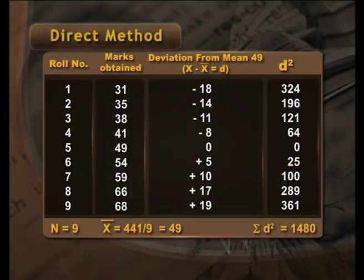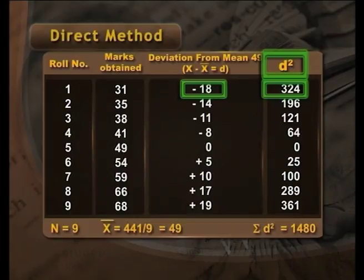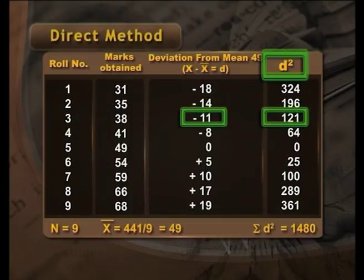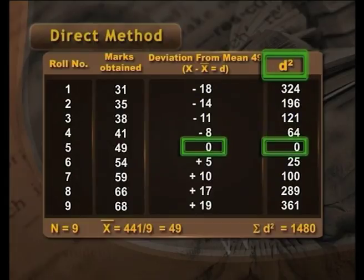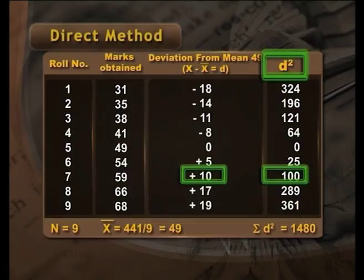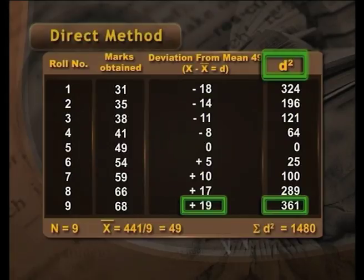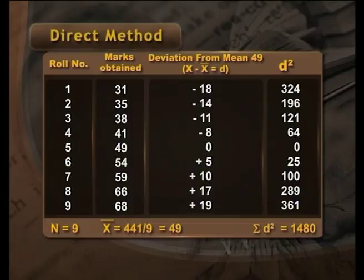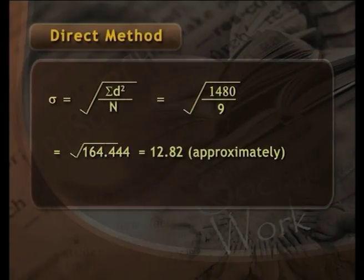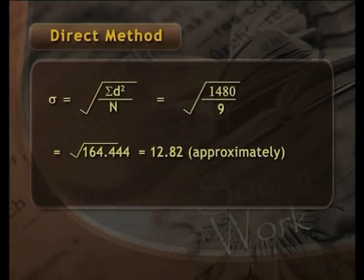Then we take the squares of deviations. The first student's deviation is minus 18; multiplied by minus 18, we get d² = 324. Square of minus 14 is 196. Square of 11 is 121. Square of 8 is 64. 0 squared is 0. 5² is 25. 10² is 100. 17² is 289. 19² is 361. The mean is 441 by 9, equals 49. The total sum of squared deviations equals 1480. Sigma equals square root of (1480 / 9) = square root of 164.444 ≈ 12.82.